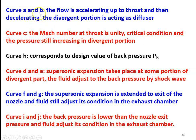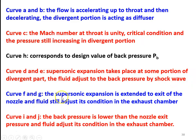In summary: for curves A and B, the flow is accelerating up to the throat, and then the divergent portion acts as a diffuser. Curve C has throat Mach number equal to unity — the critical condition — and pressure is still increasing in the divergent portion. Curve H corresponds to the design value of the back pressure. Curves D and E involve supersonic expansion in some portion of the divergent path, with the fluid adjusting to back pressure via shock wave. Curves F and G see supersonic expansion extended to the nozzle exit but still adjusted in the exhaust chamber. Curves I and J occur when back pressure is lower than nozzle exit pressure, and the fluid adjusts its condition in the exhaust chamber.